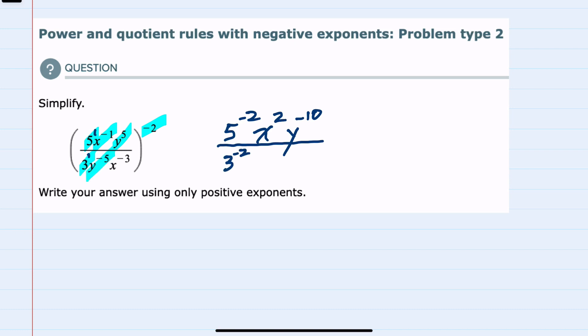And then lastly our x negative 3, the powers multiply: negative 3 times negative 2 is positive 6. So we've simplified by removing that outside power.